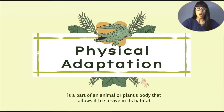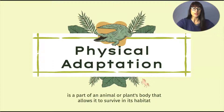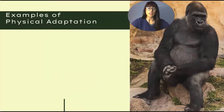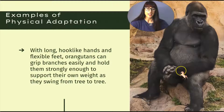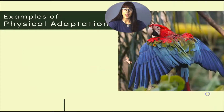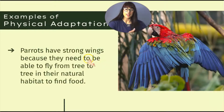Physical adaptation is a part of an animal's or plant's body that allows it to survive in its habitat. For example, here we have an orangutan — with their long, hook-like hands and flexible feet, they can grip branches easily and hold them strongly enough to support their own weight as they swing from tree to tree. This is one of their physical adaptations that helps them survive in their habitat.